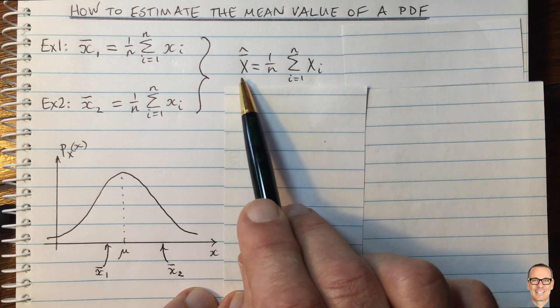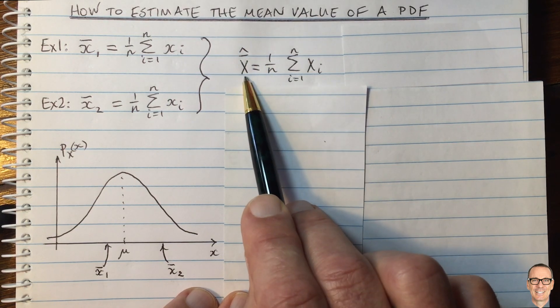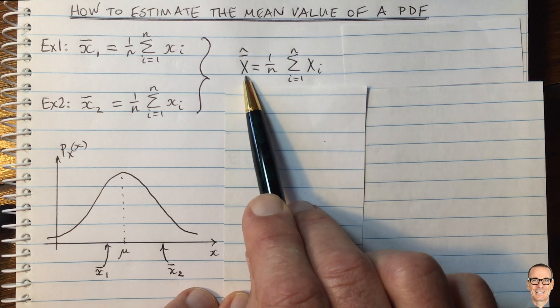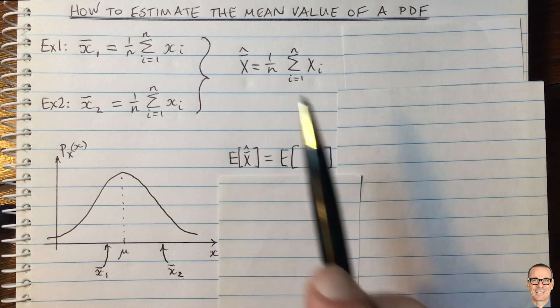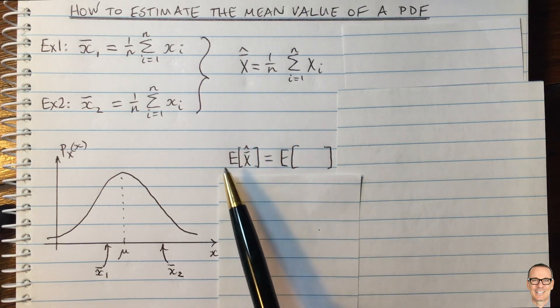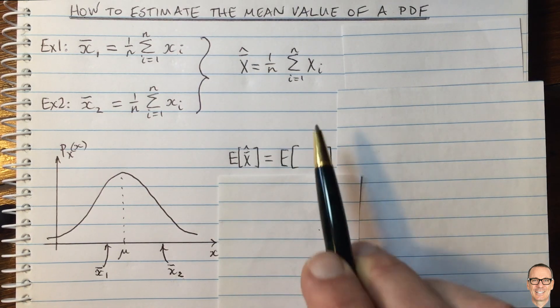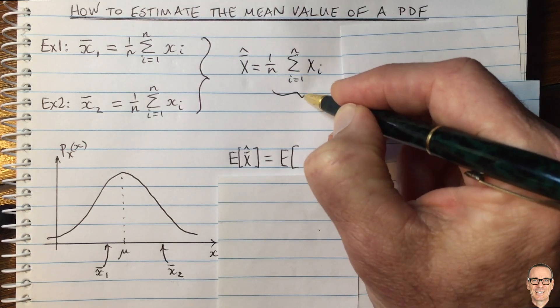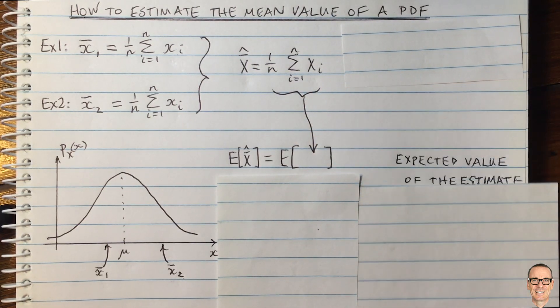So of course, when we ask ourselves about the performance of this estimate, we'd like to know its mean value and we'd like to know its variance. So this is quite a complex concept to get your head around the first time you think of it. Here is the expected value of this estimate. And it's simply the expected value of this term in here. Now, before I write out the equation for that,